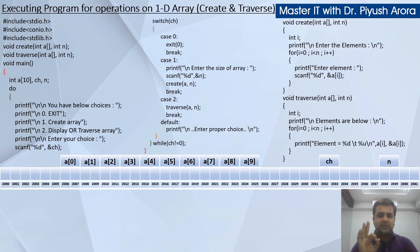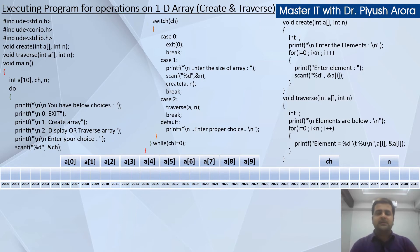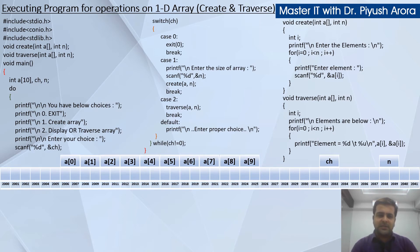The options are either 0 to exit, 1 to create, and 2 to display. If the user enters any other choice, it will go to the default case in the switch statement, which we will show later. The user will input the choice here via scanf with %d, storing it in the variable choice.